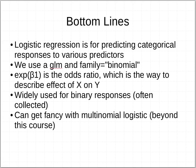So, the bottom lines for logistic regressions, I would say, is it's a fairly straightforward, simple approach if we're dealing with simple binary logistic models. And, it's used for predicting those categorical responses to various predictors. We use a GLM, just like you've seen with other ones. But, in this case, we use the binomial family, where you might not have used that before. The e to the beta 1, or exponent beta 1, as you might express it in R, is the odds ratio. This is the way to describe the effect of X on Y. You actually extract that from that model output. It's really a widely used approach for binary responses, which we collect more than you might have thought based on what we've been doing so far this semester, where we've been focusing on other kinds of data.